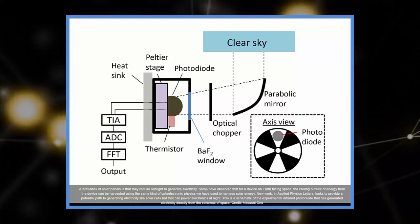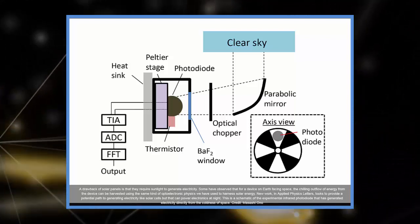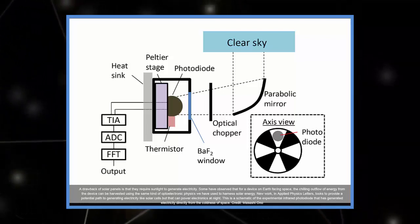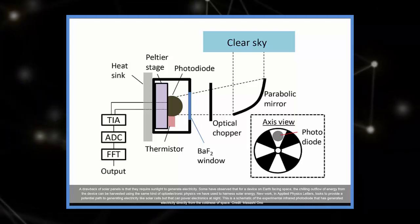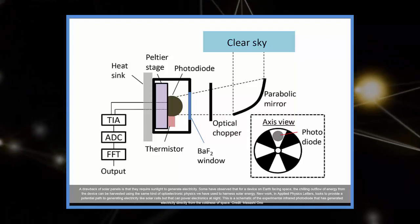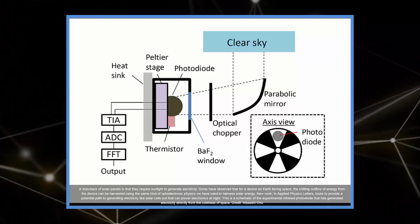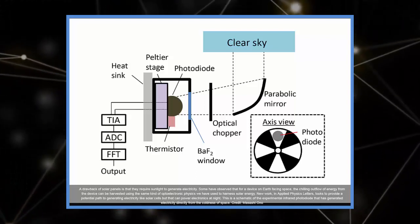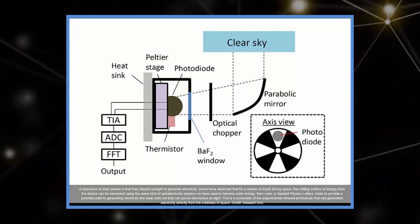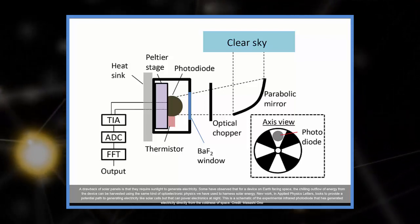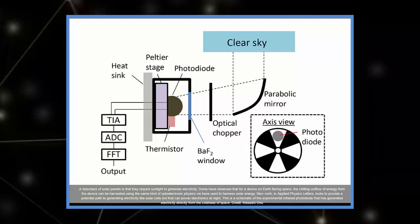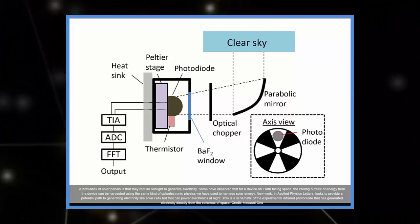In contrast to leveraging incoming energy as a normal solar cell would, the negative illumination effect allows electrical energy to be harvested as heat leaves a surface. Today's technology does not capture energy over these negative temperature differences as efficiently. By pointing their device towards space, whose temperature approaches mere degrees from absolute zero, the group was able to find a great enough temperature difference to generate power through an early design.